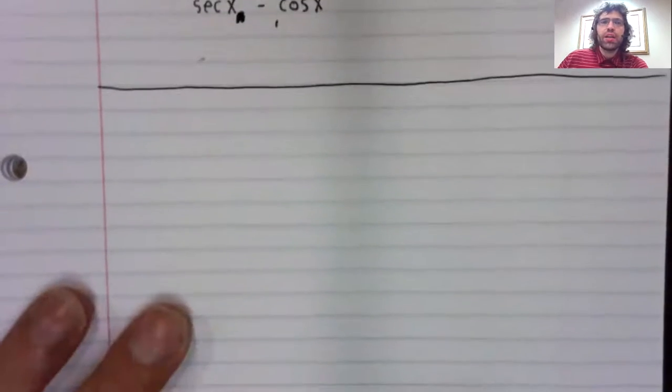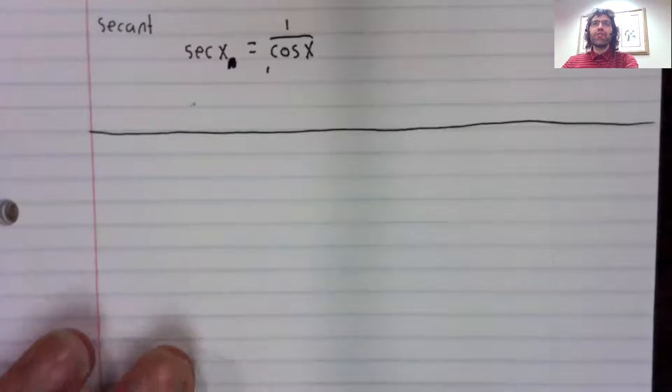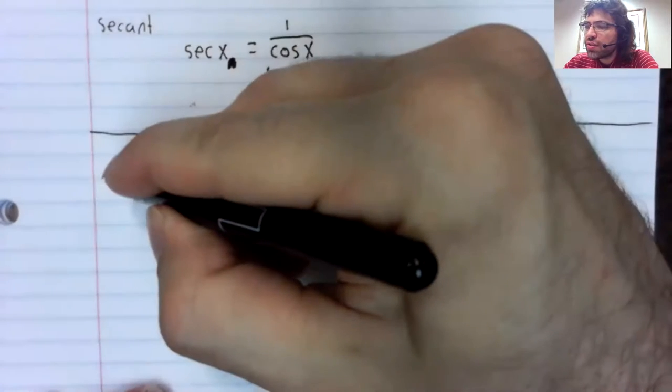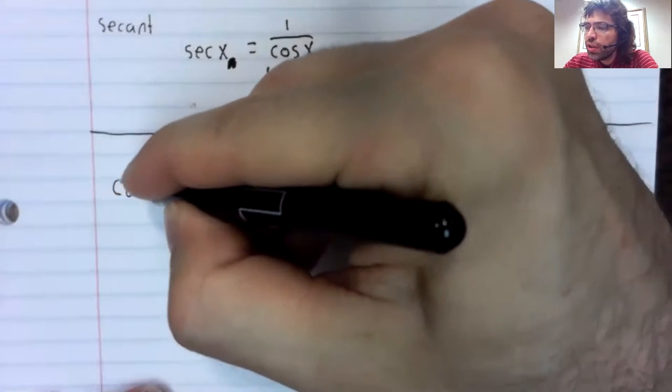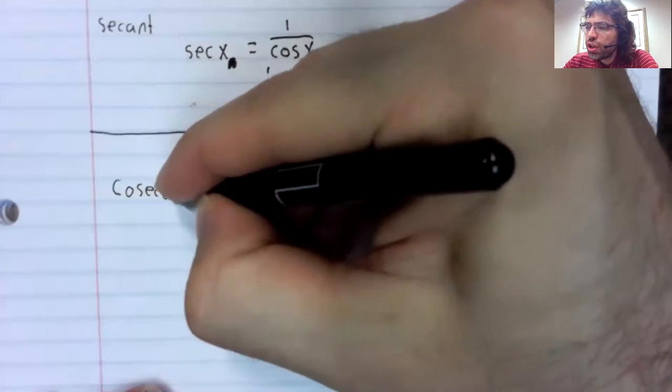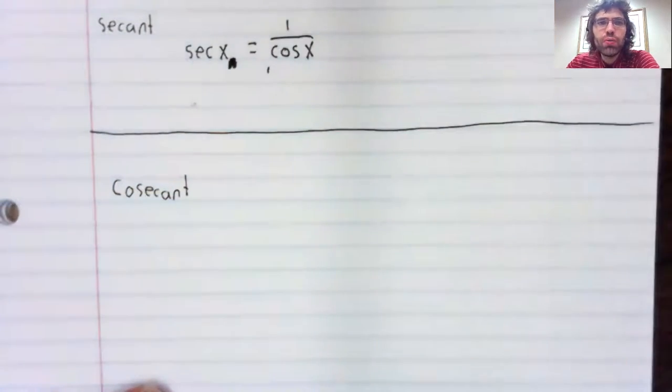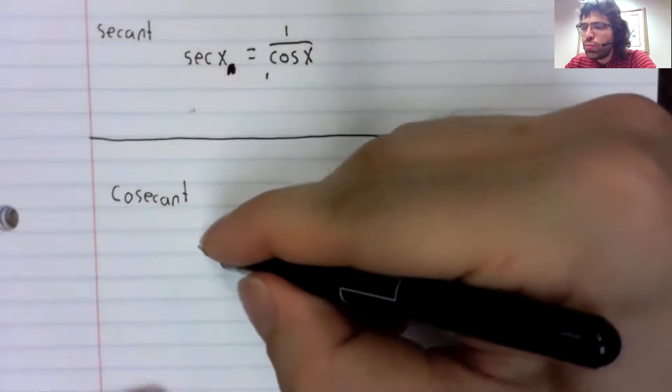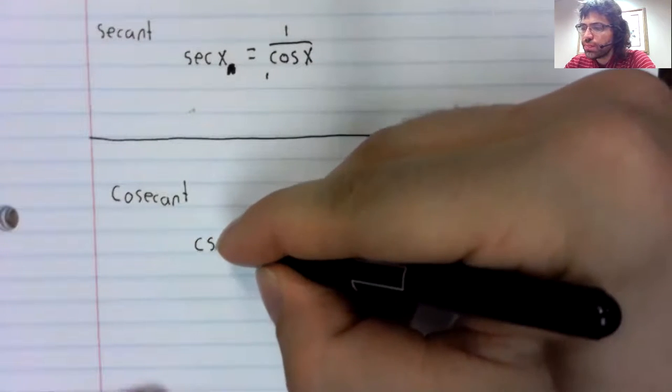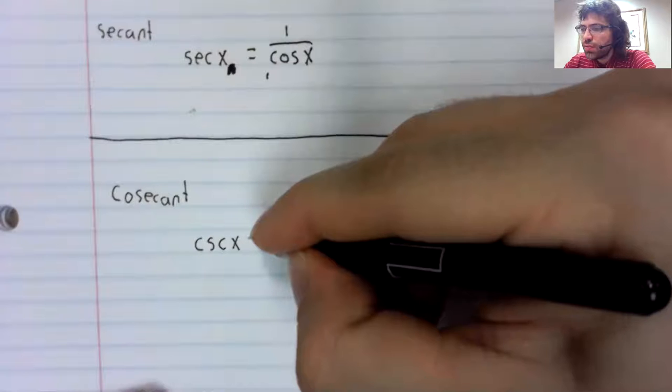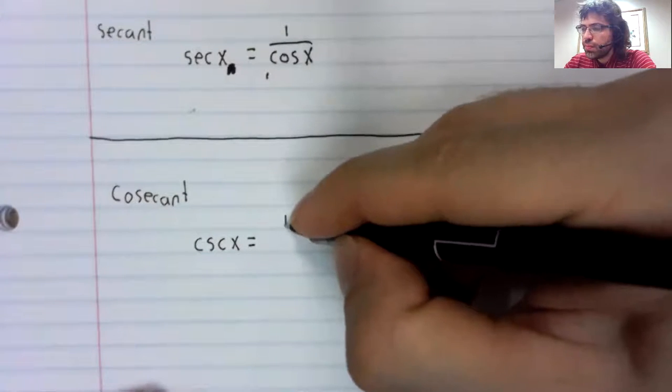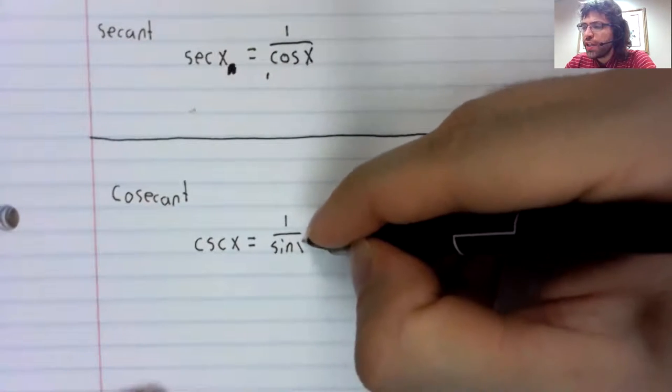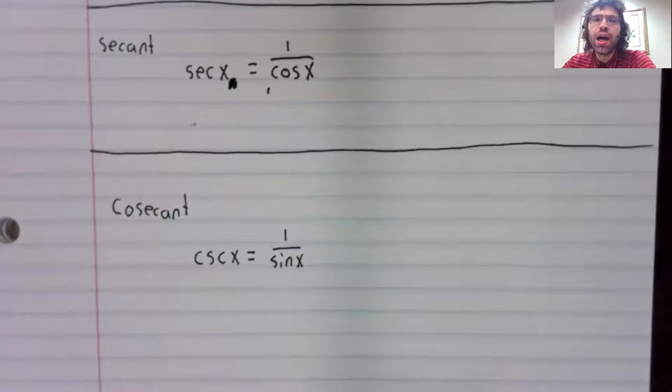The remaining two trig functions are significantly less important, but you should at least know what they are. The cosecant is one divided by the sine.